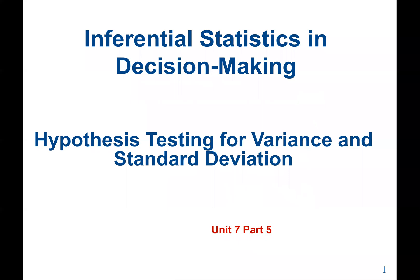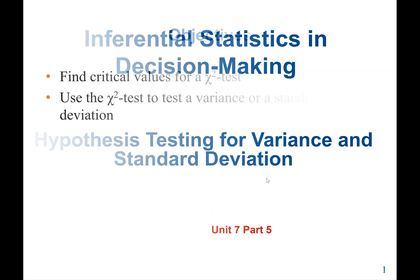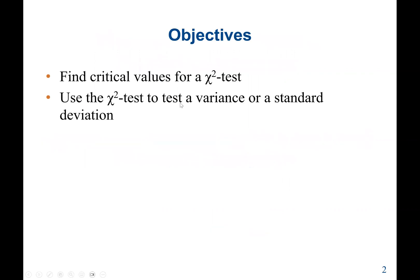Welcome back to Inferential Statistics in Decision Making. These lectures cover hypothesis testing for variance and standard deviation. This is Unit 7, Part 5. Our main objective is to learn how to find the critical values for a chi-squared test, and also how to use the chi-squared test to test the variance or standard deviation.